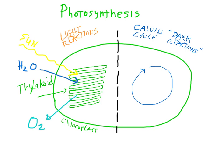On the other side of our model we have carbon dioxide gas, which enters into the Calvin cycle, producing a simple plant sugar known as PGAL. If it wasn't for the ability to produce PGAL, animals never would have evolved on earth.